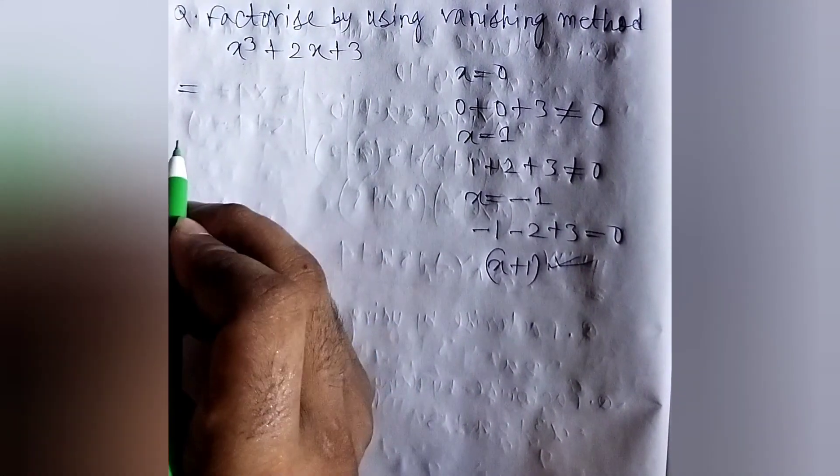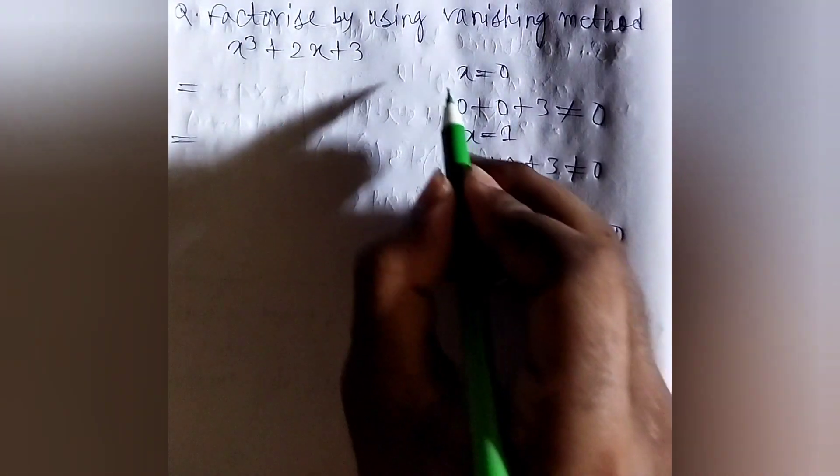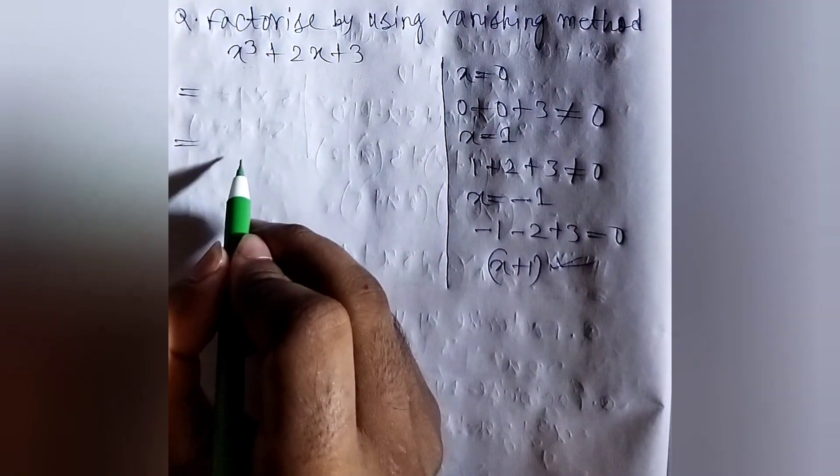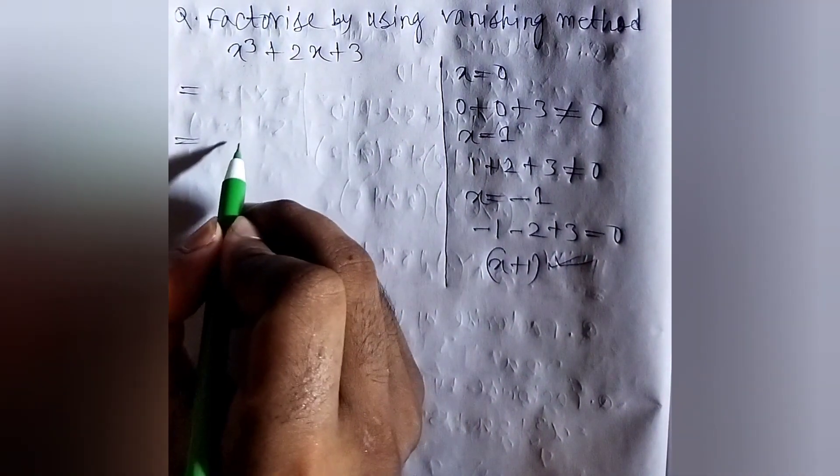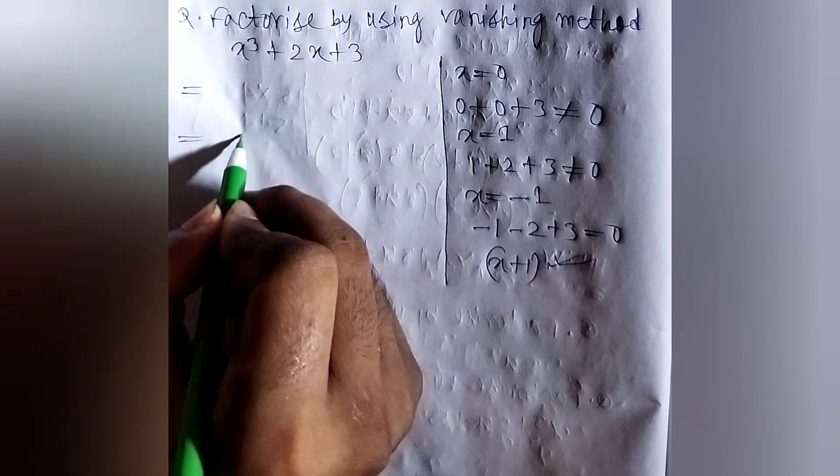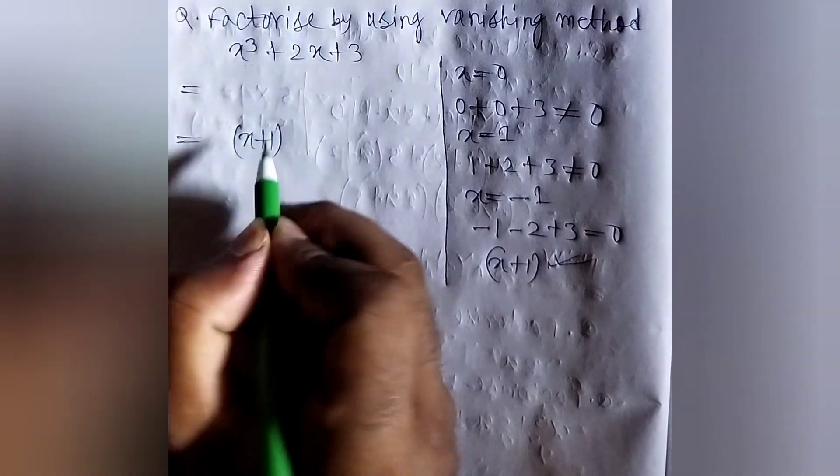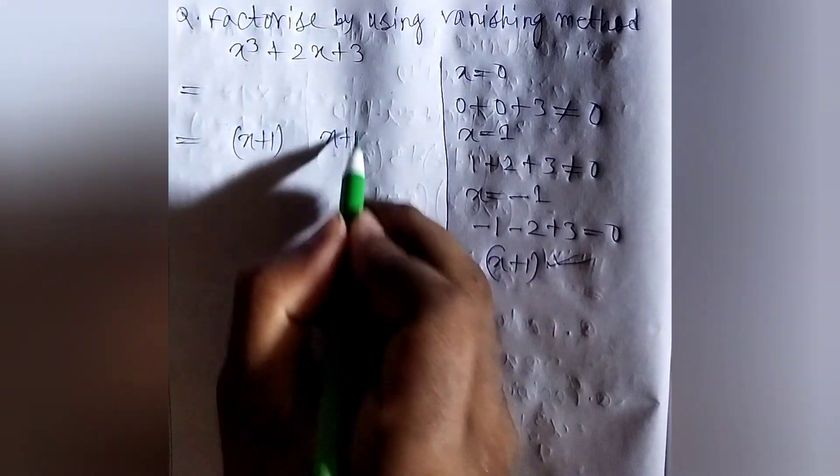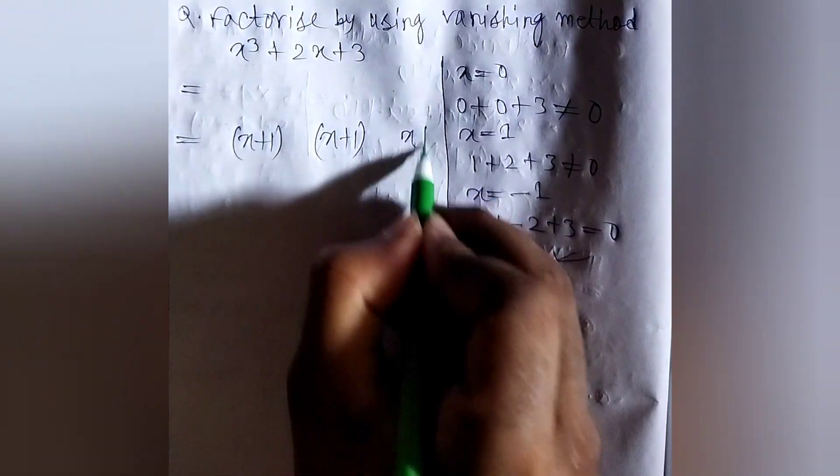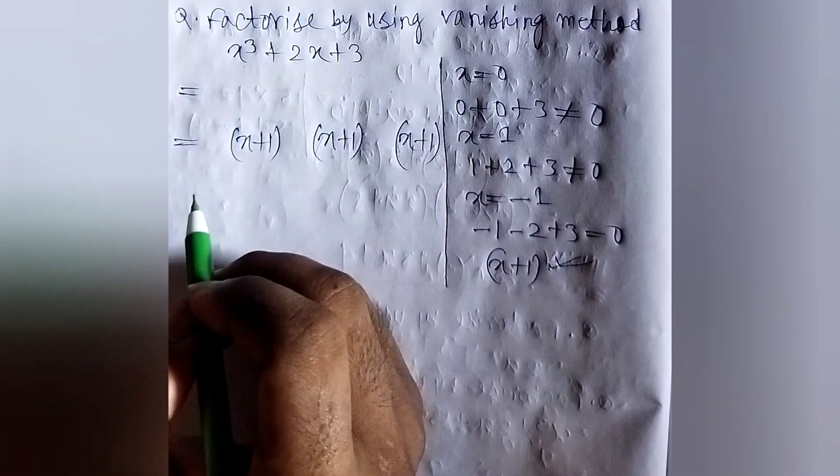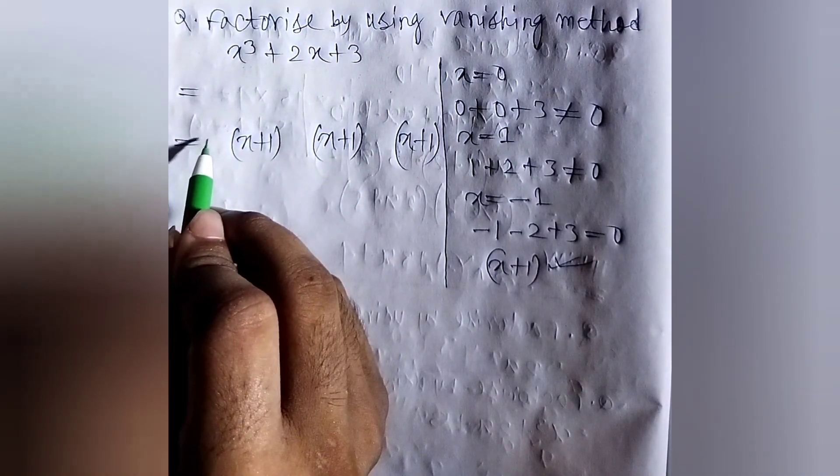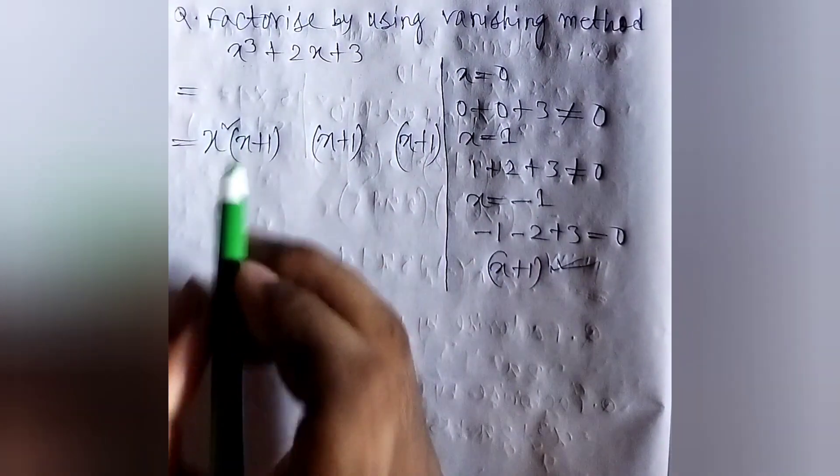We will blank the second line and start from the third line. So, we will write x plus 1 here three times: x plus 1, x plus 1, x plus 1. Now, here is x cube, so we have to take here x squared.